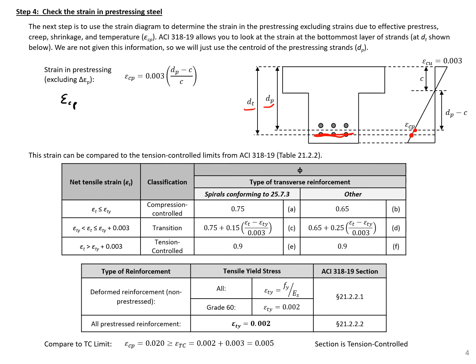The strain here, epsilon sub cp, is going to be equal to 0.003 times (20 inches minus our C of 2.61 inches), all divided by 2.61 inches, which gives us a strain equal to 0.020. We can compare this to our tension-controlled strain, which is epsilon T y plus 0.003. When we have prestressing reinforcement, our epsilon T y is equal to 0.002, so our tension-controlled strain is equal to 0.005. We can see that our strain in our prestressing is greater than this value, so we'll be tension-controlled.